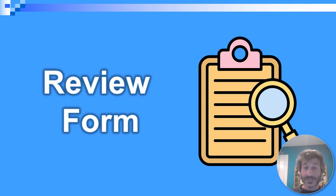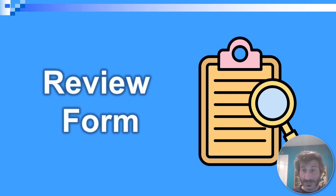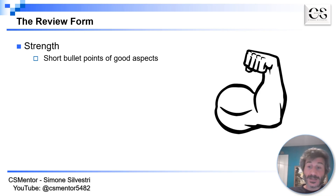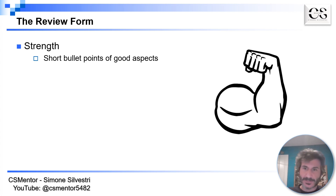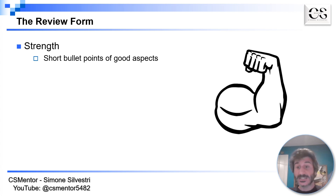Let's start from the review form — this is the form that you need to fill in order to complete your review. The first part generally requires you to summarize what are the strengths of the paper. In bullet points and short sentences you should summarize what you like about the paper — for example that the problem is relevant, that it is well written, that the results are very meaningful, that it significantly improved the state of the art, etc.